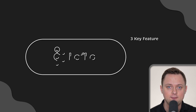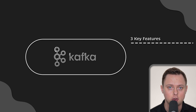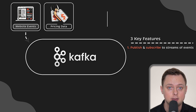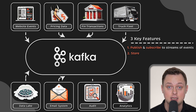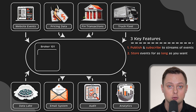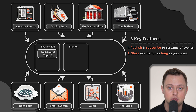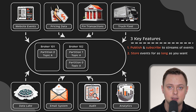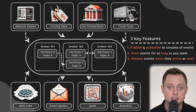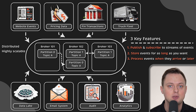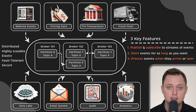Apache Kafka combines three key features you can use to build your applications. First, you can publish or write data to Apache Kafka and subscribe to and read that data. Second, you can store those events — sometimes called messages — in Kafka as long as you want. Due to replication and other features, it's almost as reliable as any other database. Finally, you can process those events as soon as they arrive or at a later time. All this functionality is provided in a distributed, highly scalable, elastic, fault-tolerant, and secure way. In this video, we'll cover all the components that help achieve that.